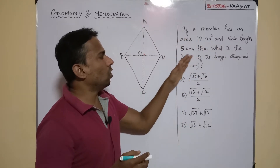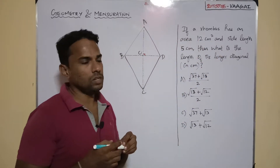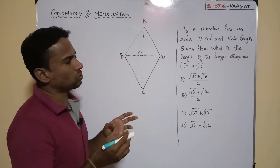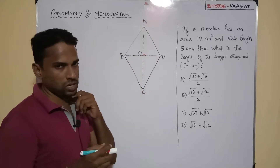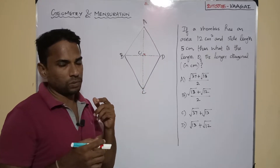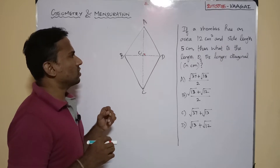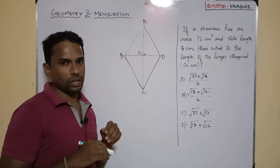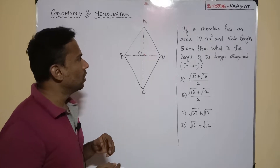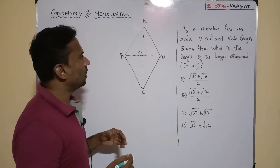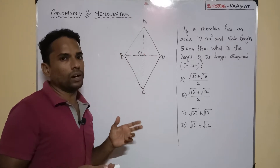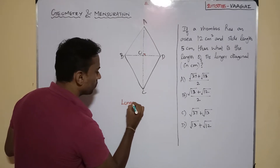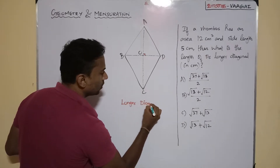The question asks: what is the length of the longer diagonal? Let us sort out the data from the question. It is better to start from the diagonals. AC and BD are the two diagonals. By viewing the diagram, it is clear that AC is going to be the longer diagonal. So the longer diagonal is AC.